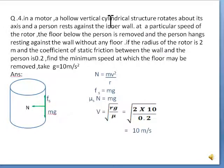Now come to fourth. In a motor, a hollow vertical cylindrical structure rotates about its axis and a person rests against the inner wall. At a particular speed of motor, the floor below the person is removed and the person hangs resting against the wall without any floor. If the radius of rotor is 2 meter and the coefficient of static friction between the wall and the person is 0.2, find the minimum speed at which the floor may be removed. Take g = 10 m/s².